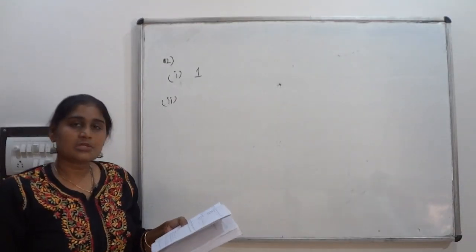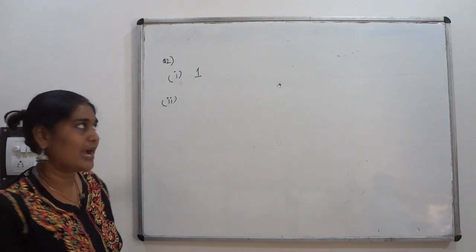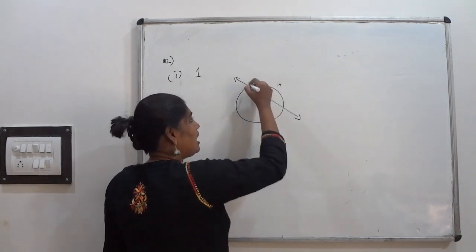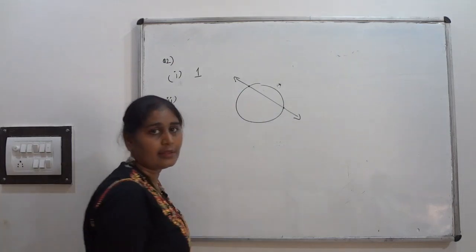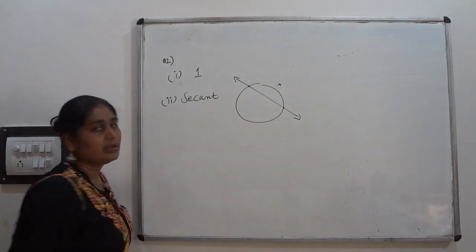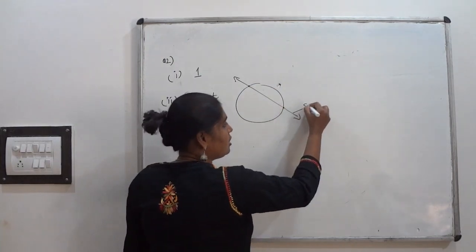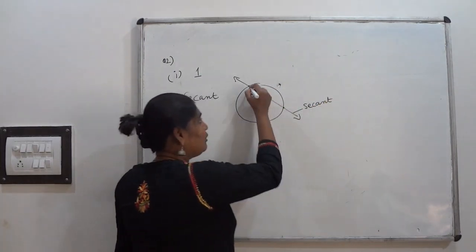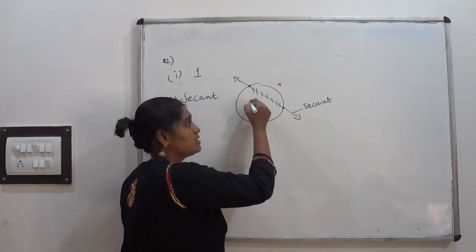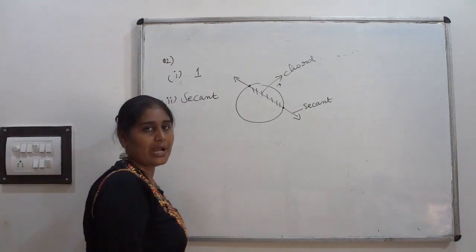Question number 2, second part: A line intersecting a circle in two points is called a secant. A line that intersects the circle at two points is called secant. Also, within that line, the line segment inside the circle is called a chord. This is the difference between chord and secant.